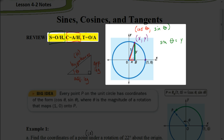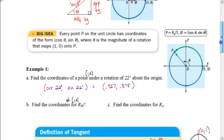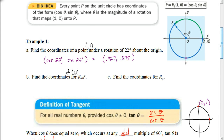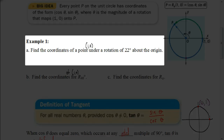So to find the x value, we always take the cosine of the angle. To find the y value, we always take the sine of the angle — that's the big idea in that box. Now let's look at some examples. For example A: find the coordinates of a point (1, 0) under a rotation of 22 degrees about the origin. That means it's been moved 22 degrees, so we need to take the cosine of 22 for x and the sine of 22 for y.